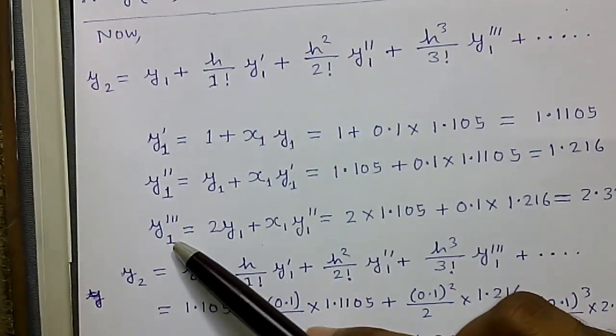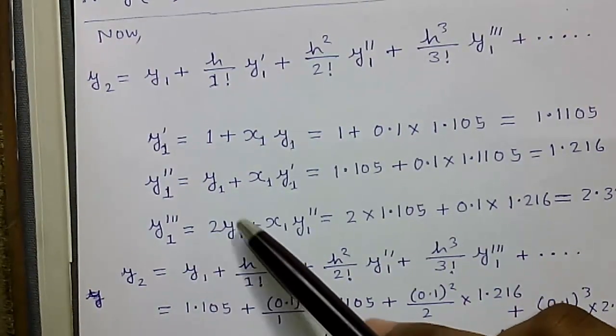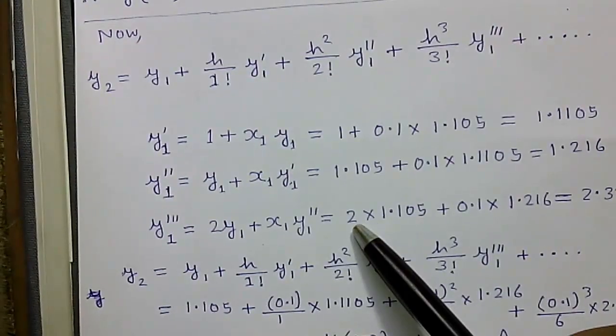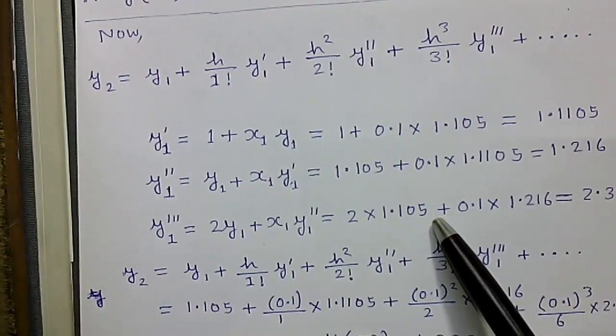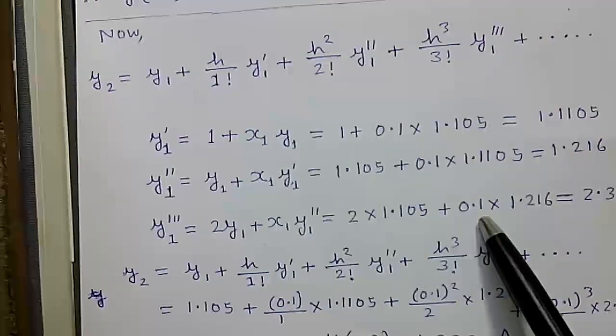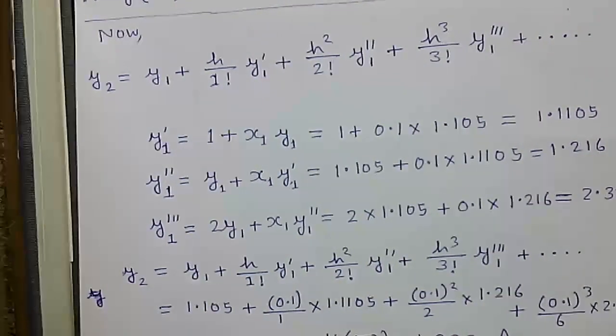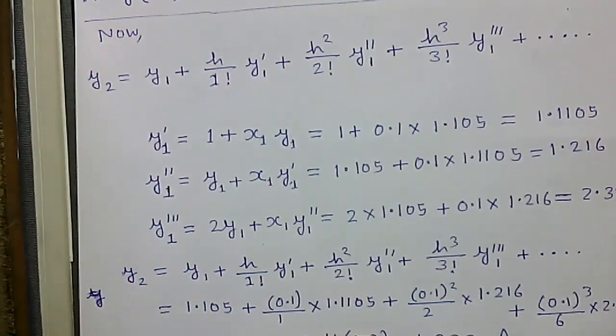Next y'''1 = 2y1 + x1·y''1. So 2·1.105 + 0.1·y''1, our previous value, which equals 2.3316.